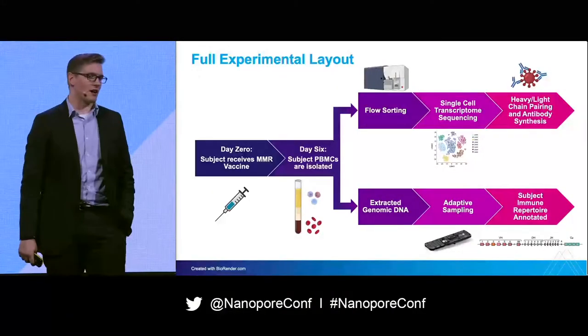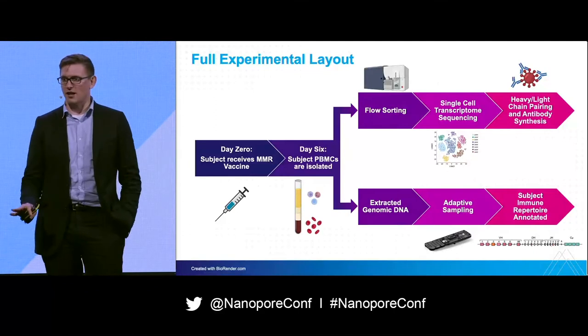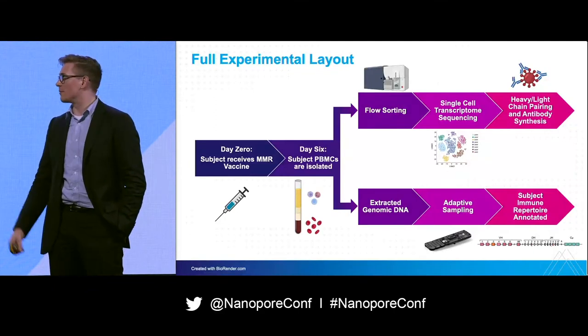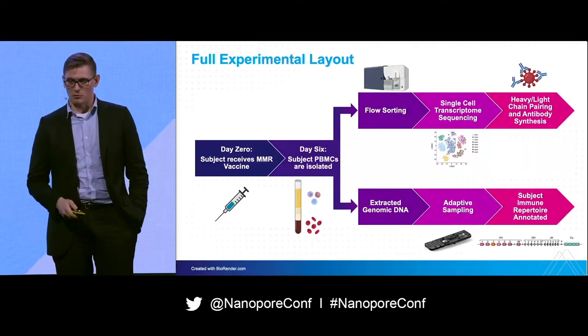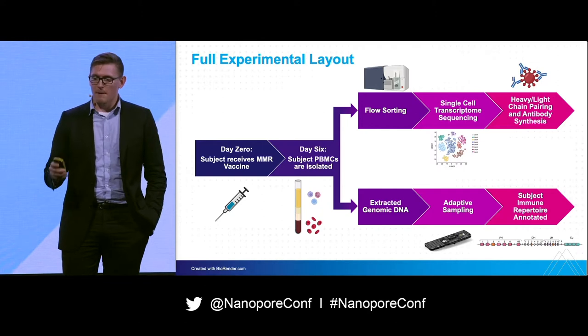Using just Oxford Nanopore, not having to utilize Illumina to pull out cell barcodes. Owen Harrington did a great talk on the new tool, Sockeye, which came out publicly on Wednesday, which allows us to do some cool stuff.